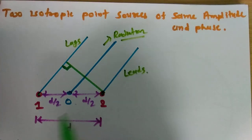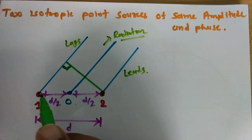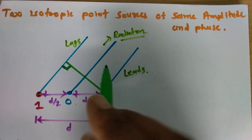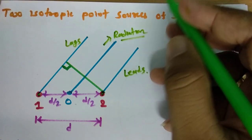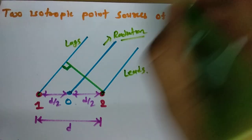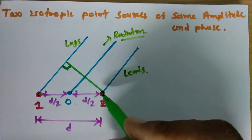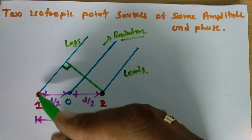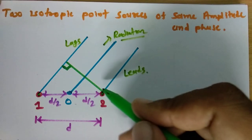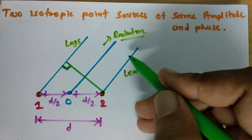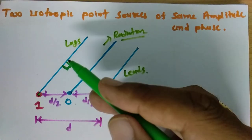Again, two point sources are separated by distance d, and the reference origin is at the center of 1 and 2. Radiation is observed at a very far distance in a given direction. The phase of source 2 leads with respect to source 1 because the signal from source 2 reaches the observation point earlier.